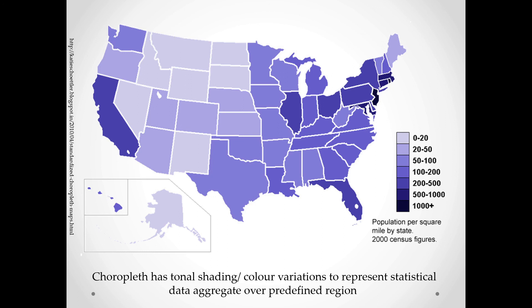You may have seen various types of choropleth maps in your daily newspaper, such as population per square mile by state, where different colors represent different values according to the given scale. Similarly, temperature variation across various states of India can be represented using a choropleth or color variation map. This is the end of Lecture 1; we will see Lecture 2 in the next video.